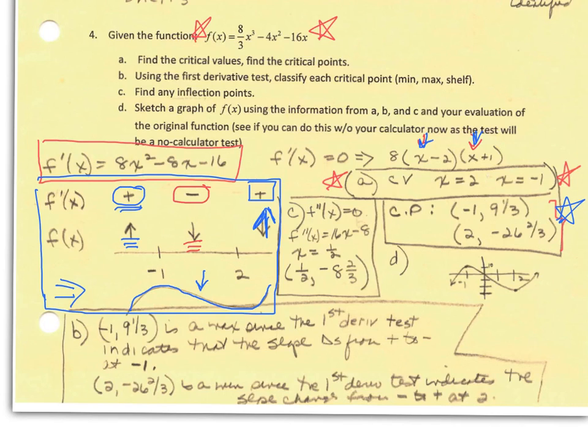To find your inflection point, you set your second derivative equal to 0 and solve for the x. My x is equal to 1 half. So at 1 half, I have an inflection point. To figure out the y value, you take that 1 half and you plug it way back here in the original function and I get negative 8 and 2 thirds.